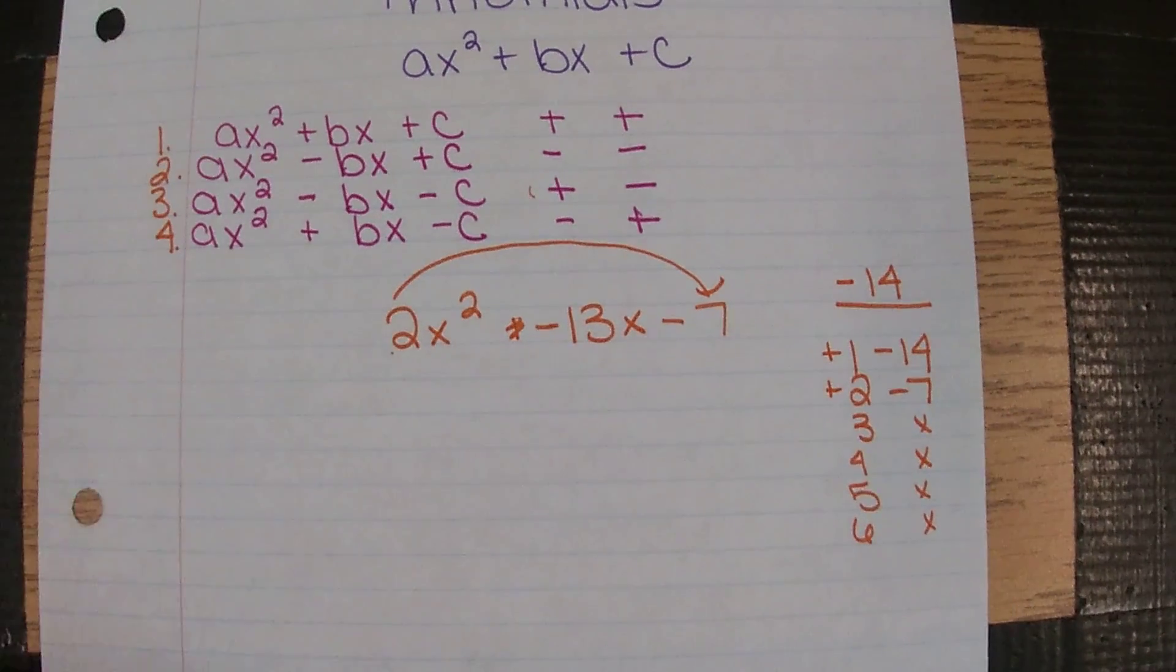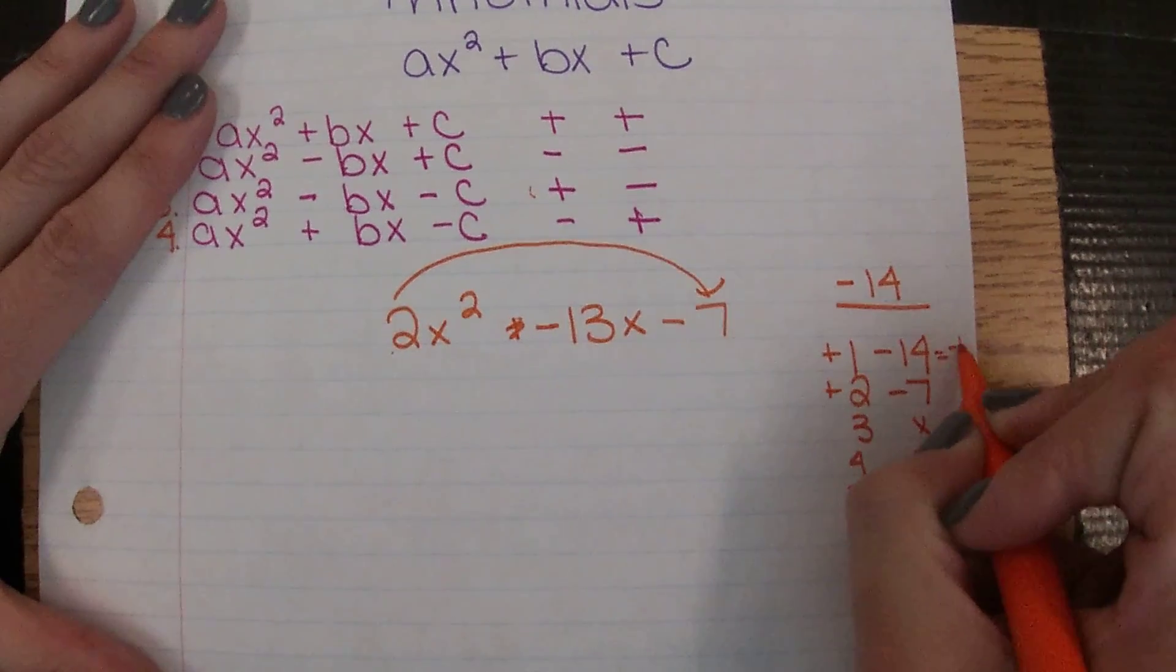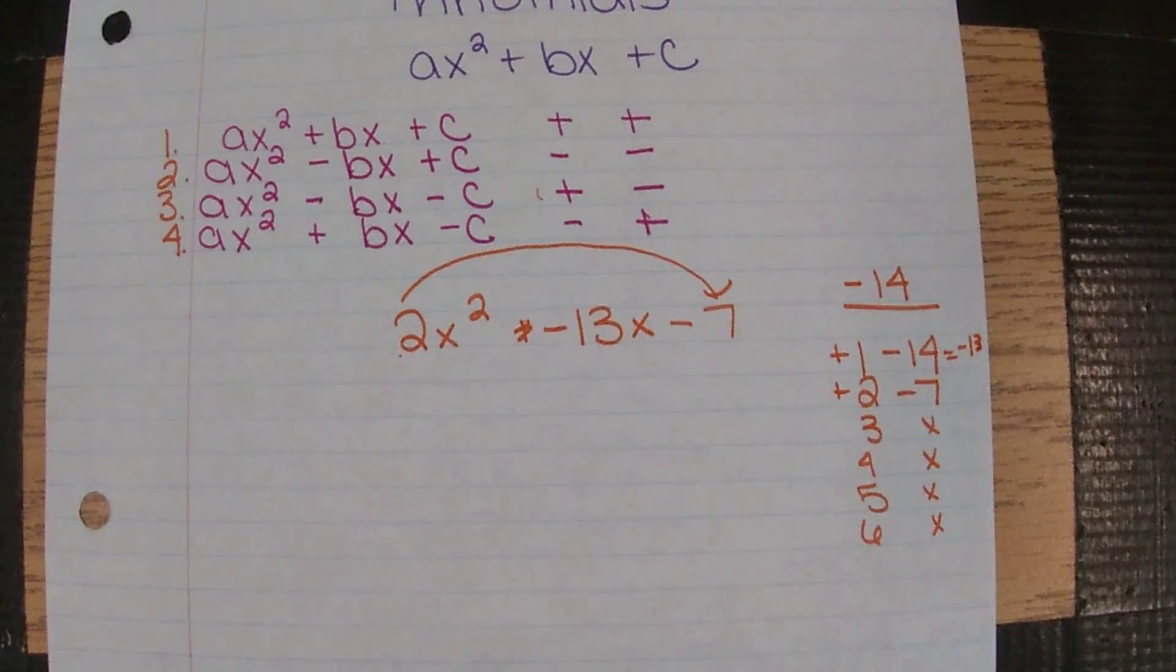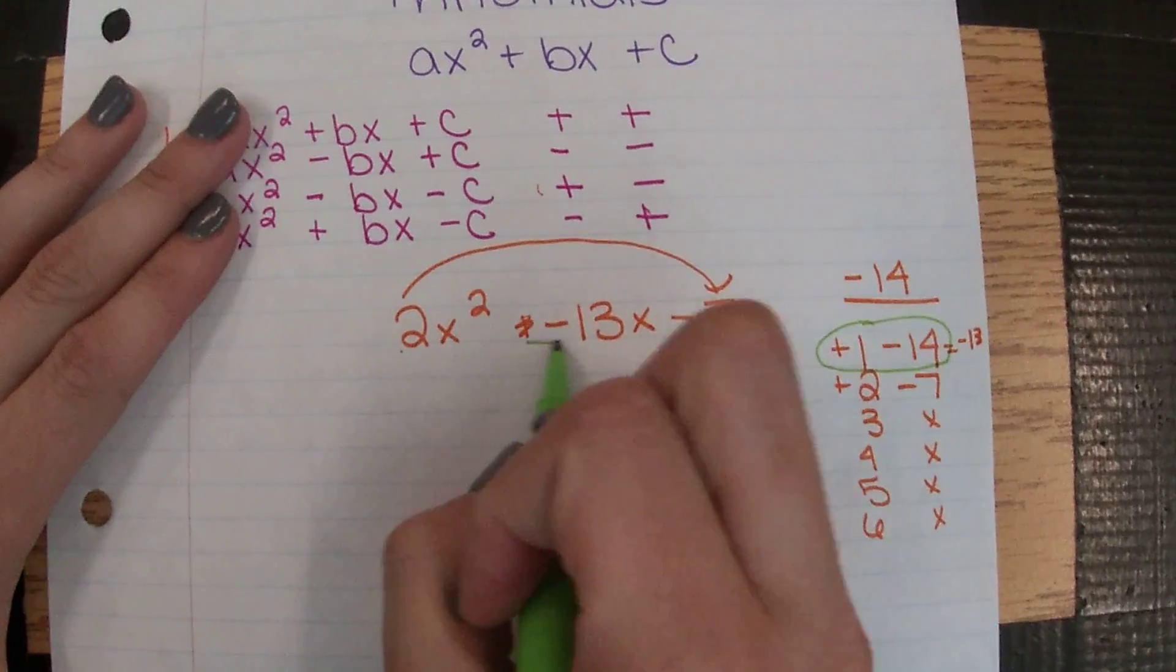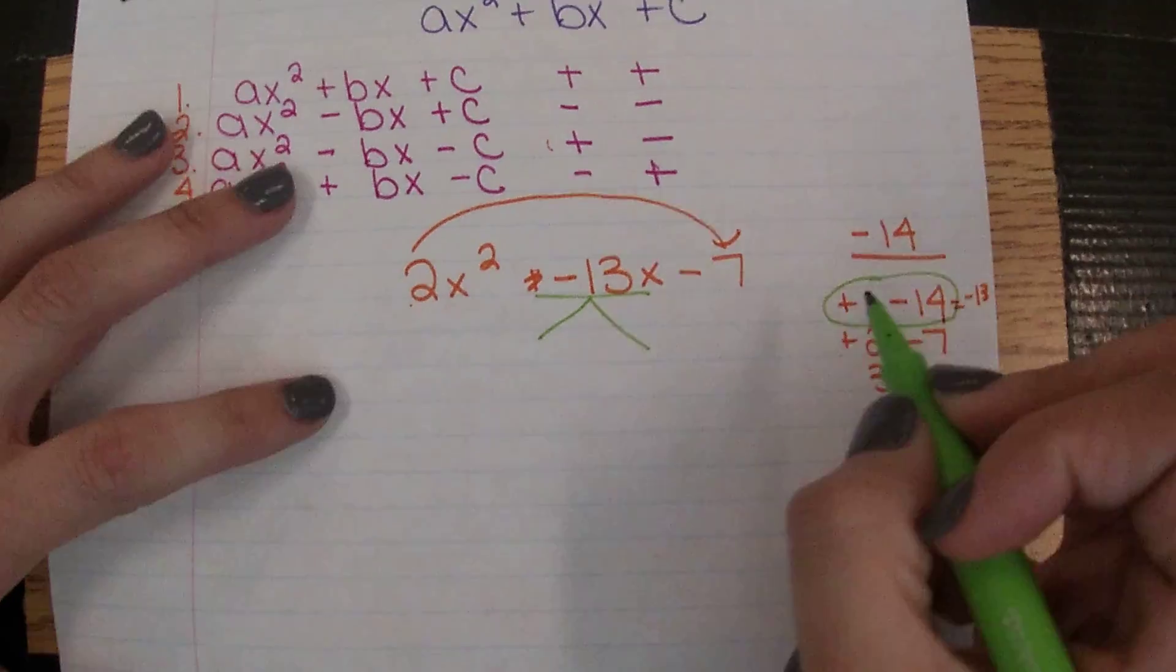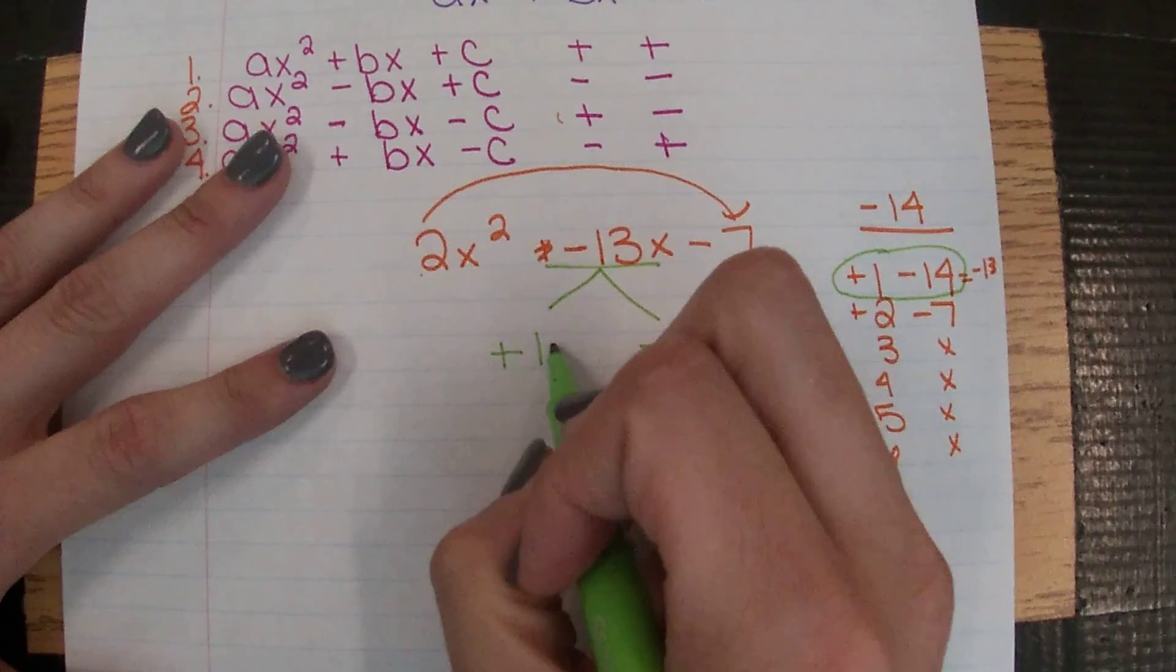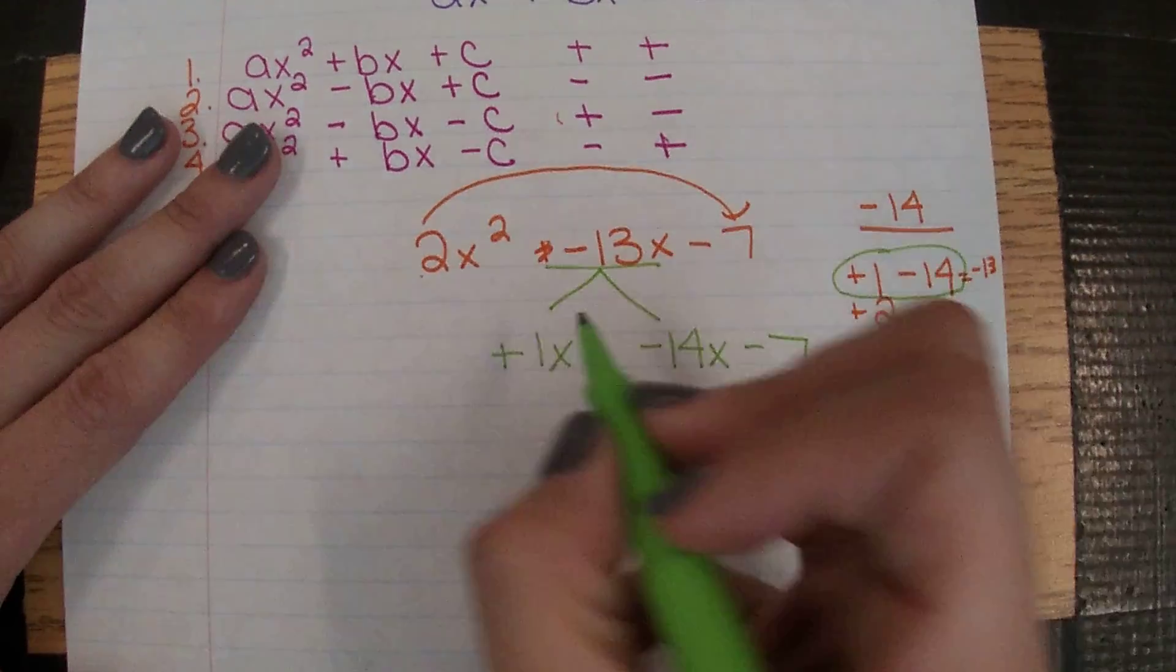And then we'll go through the same. So 1 plus negative 14—if you need to use a calculator, you can—that will give us negative 13. And then just like we did yesterday, once we find our set that adds up to b, we're going to split this into two pieces: a positive 1 and a negative 14, where these both get x's because that had an x. The 7 comes straight down.